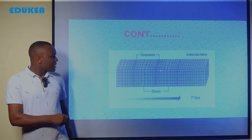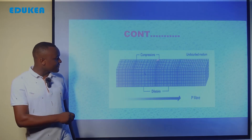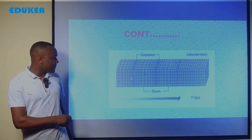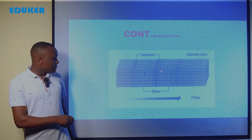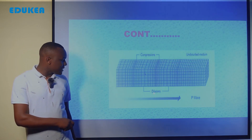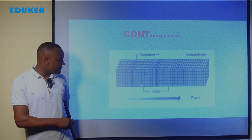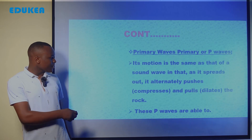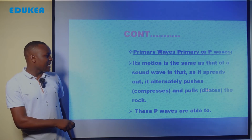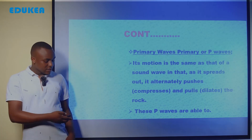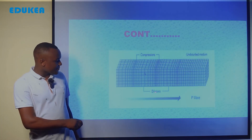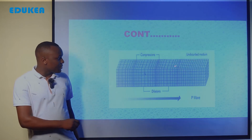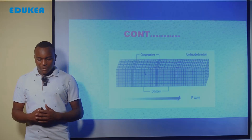As you can see in the diagram, there is compression of the waves — where the waves are packed closely together — and also dilation, where the waves are spread apart. There is compression and dilation as induced by the motion of the primary waves. That is how primary waves look.